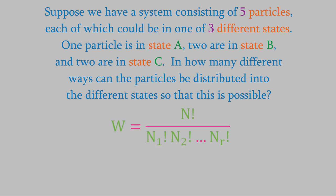We'll use this equation. There are five particles, so n is 5. In the denominator, we have the factorials of the number of particles in each of the states. When we perform the calculation, we get W equals 30. So there are 30 different ways we could set up the system.